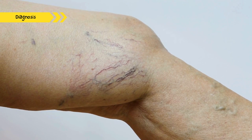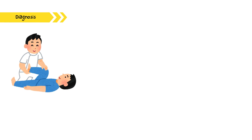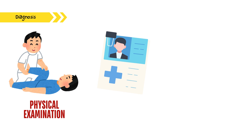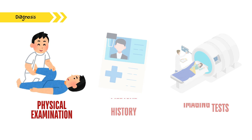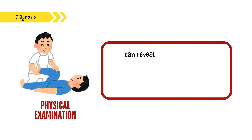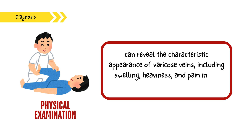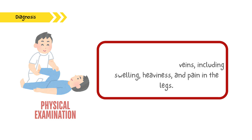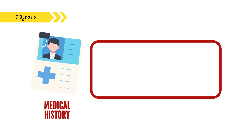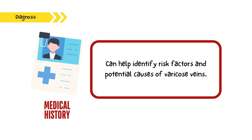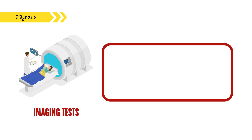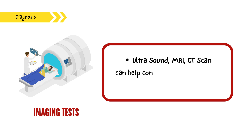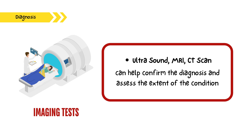Diagnosing varicose veins typically involves a combination of physical examination, medical history, and imaging tests. A physical examination can reveal the characteristic appearance of varicose veins, including swelling, heaviness, and pain in the legs. A thorough medical history can help identify risk factors and potential causes. Imaging tests such as ultrasound, MRI, or CT scans can help confirm the diagnosis and assess the extent of the condition.